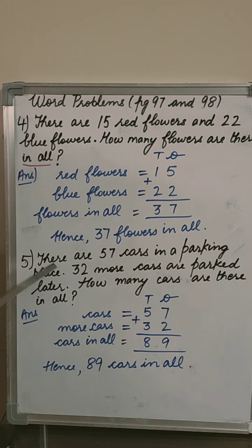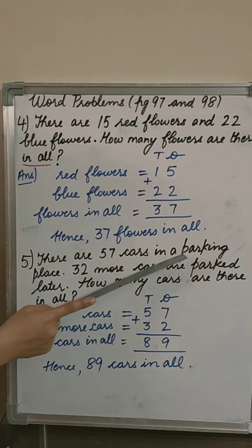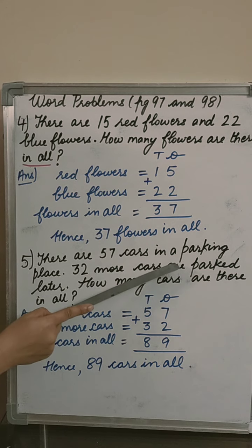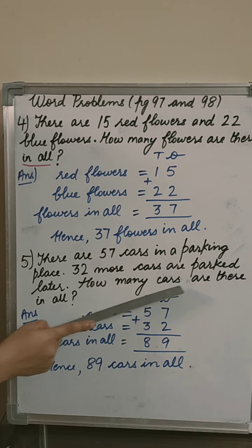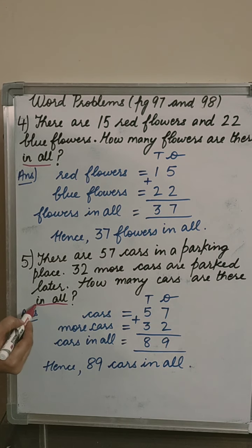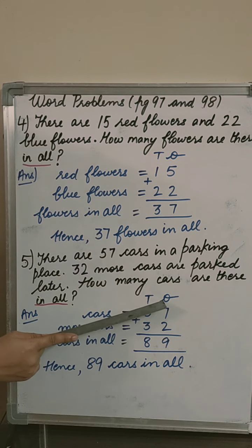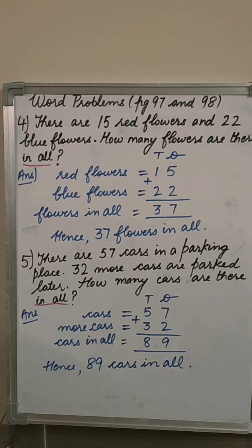Next question. There are 57 cars in a parking place. Parking place is where we park our cars. 32 more cars are parked later. How many cars are there in all? In all means plus. Working: cars 57, more cars 32, cars in all means plus. Ones column, 7 plus 2, 9. Tens column, 5 plus 3, 8. Hence, there are 89 cars.